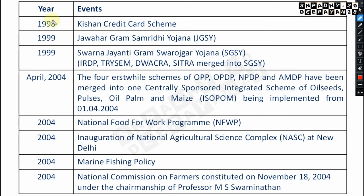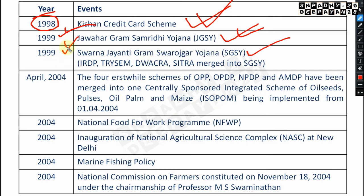The Kisan Credit Card Scheme was launched in 1998 — very very important. The Jawahar Gram Samridhi Yojana (JGSY) is very very important — started in 1999. SGSY — Swarna Jayanti Grameen Swarozgar Yojana — was also started in 1999. Under SGSY, the earlier schemes IRDP, TRYSEM, DWCRA, and SITRA were all merged.